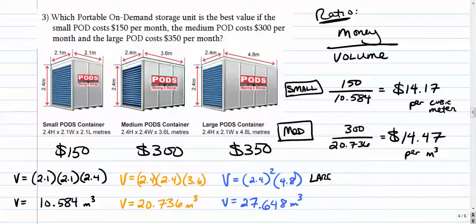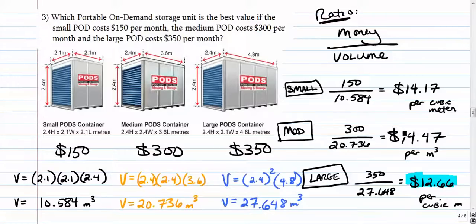Let's look at the large one, see what that ratio is. So we have $350 over 27.648. So $350 over 27.648 comes out to be, oh, this one's pretty good. This is $12.66 per cubic meter. So clearly, I think it's easy to see that the large pod is the best value, the best cubic space for your dollar. You're paying less than $13 for every single cubic meter, but the worst value is actually the medium pod.